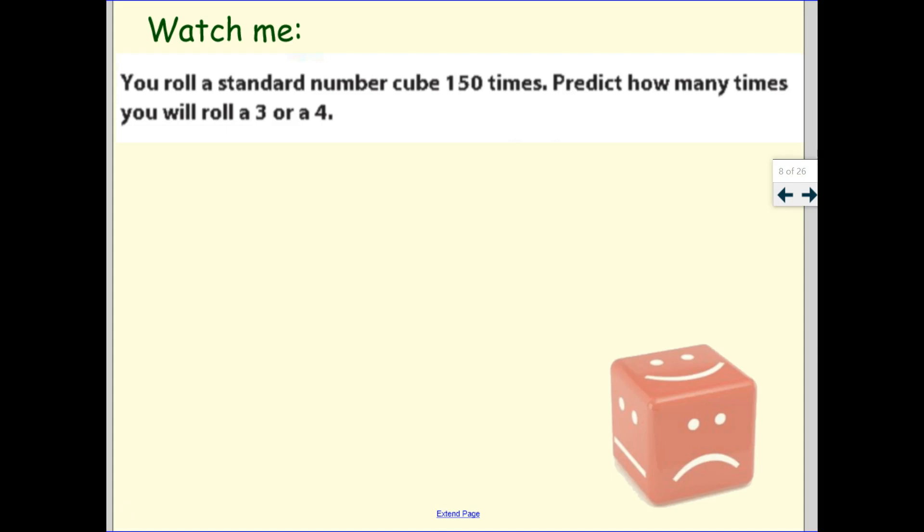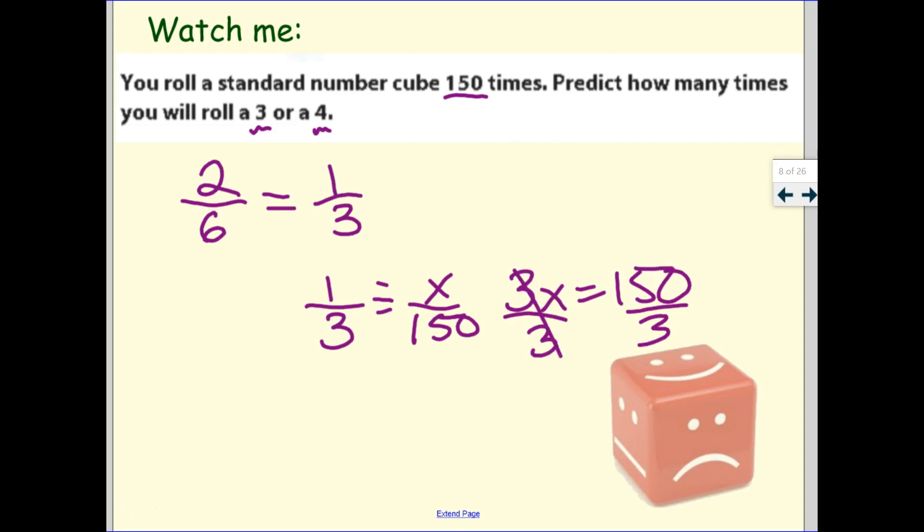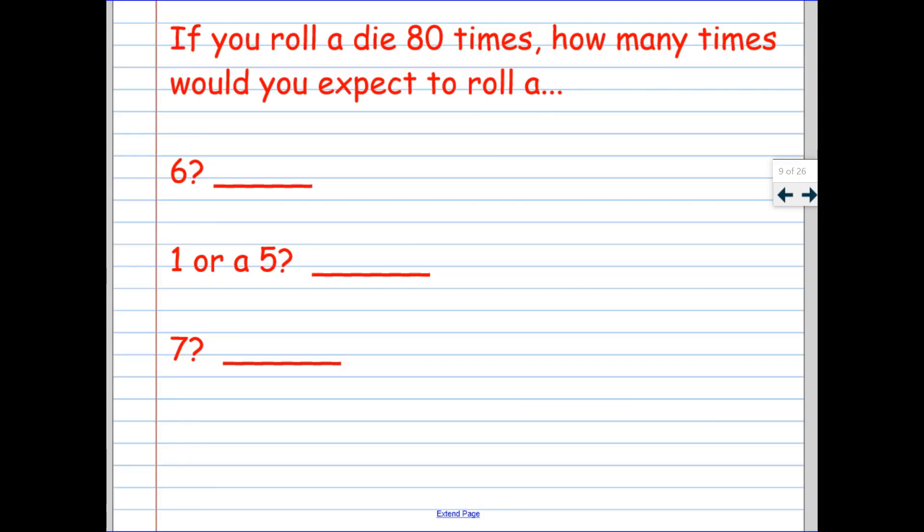All right, here's another one. If I roll a die 150 times, how many times can I predict getting a 3 or a 4? If I roll a 3 or a 4, that's 2 sides out of 6 sides. So my probability of that happening is 1/3. Now I set up my proportion. I put 1/3, my probability on one side. And then I'm going to put my prediction on the other side. So I'm going to roll it 150 times total. So that goes on the bottom. And I want to know how many times out of the 150. So that's going to go on top. So again, loop it up. Solve for x. I'm going to get 3x equals 150. Divide by 3. X equals 50 times. I can predict what would happen. Go ahead and pause and copy this down.